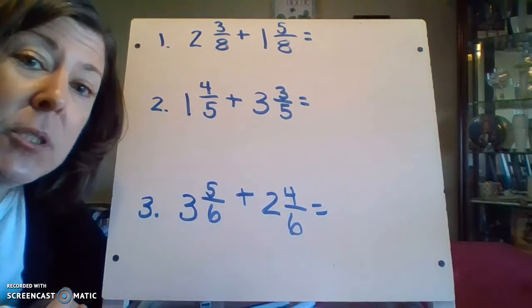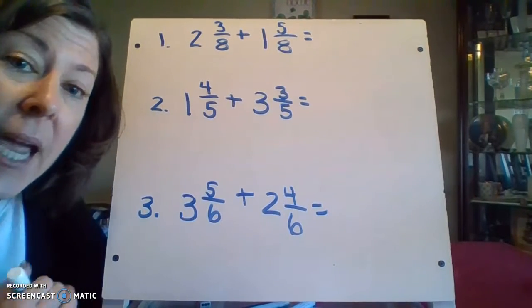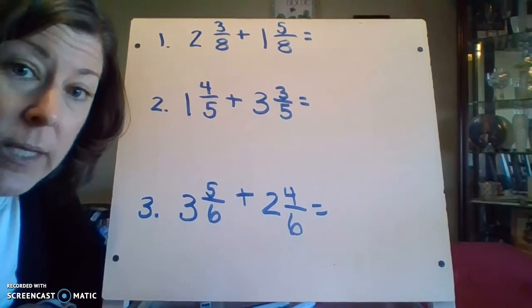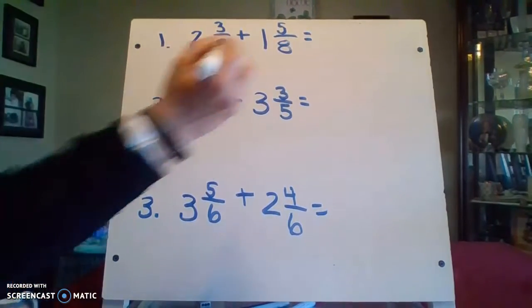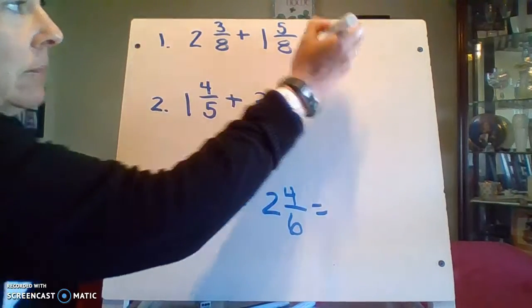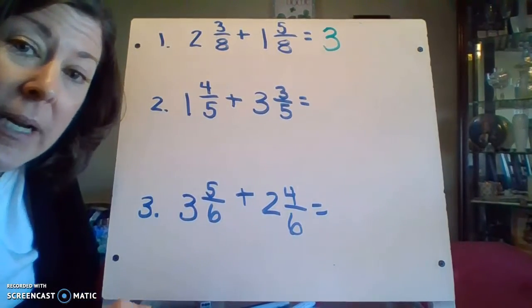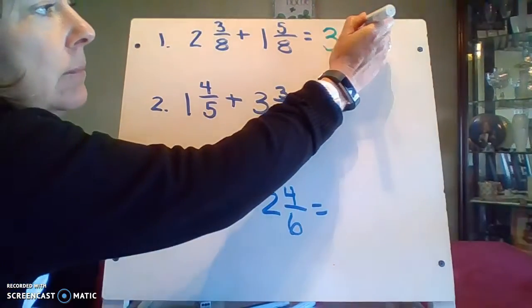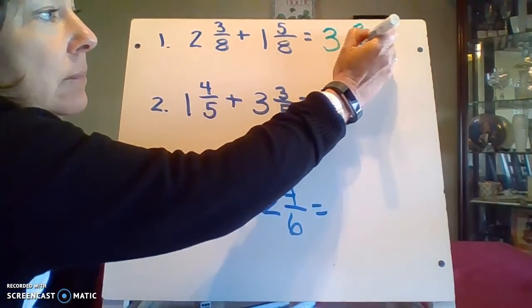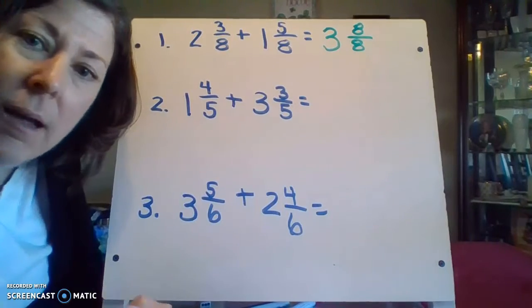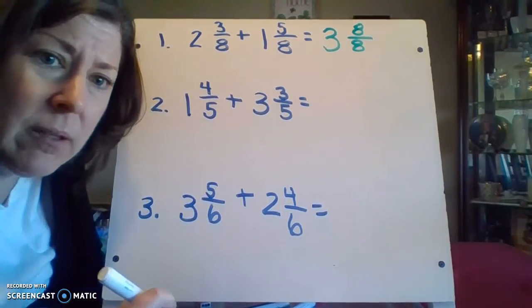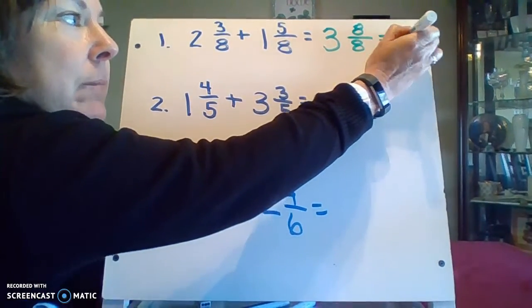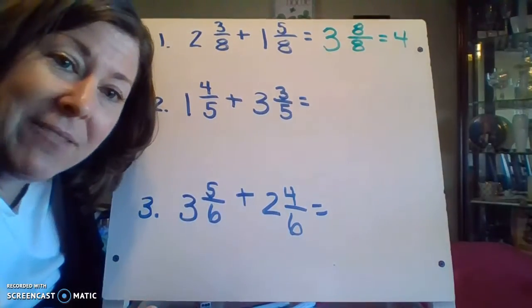So our first example is two and three-eighths plus one and five-eighths. And remember, I'm going to start simply by adding the ones. Two ones plus one one is three ones. Then I'm going to add my fractions. Three-eighths plus five-eighths equals eight-eighths. Well, I know that eight-eighths is just another one. Three and one gives me a final answer of four.